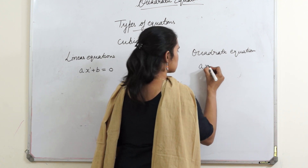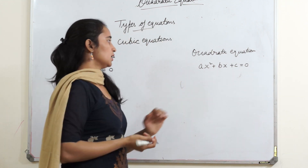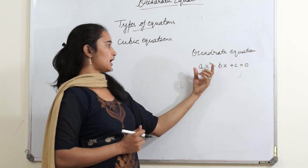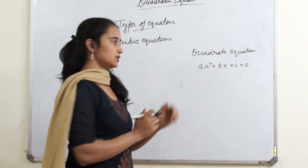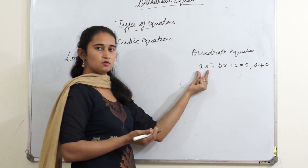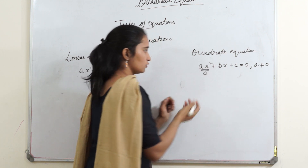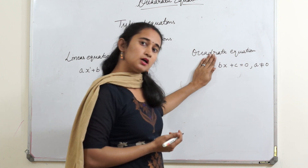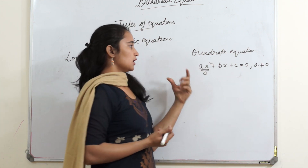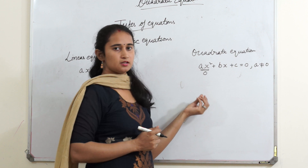Now we come to an equation with highest degree 2. The standard form is ax squared plus bx plus c equals to 0. The highest degree of x is 2, so any equation with highest degree 2 is a quadratic equation. The condition is that a should not be equal to 0, because if a is 0, then that whole term becomes 0 and the equation becomes a linear equation. So for a quadratic equation, a must not equal 0 — a could be any real number.